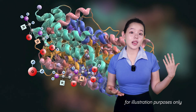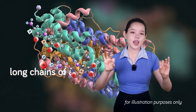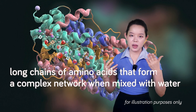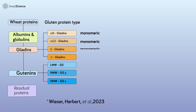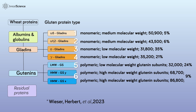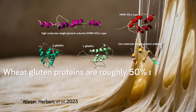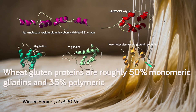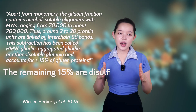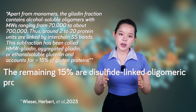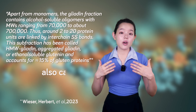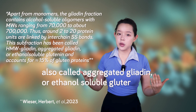To give some visualization of what they look like, these proteins are long chains of amino acids that form a complex network when mixed with water. We can also classify gluten proteins into six different types according to similarities and differences in the amino acid sequences, as shown here. Wheat gluten proteins are roughly 50 percent monomeric gliadins and 35 percent polymeric glutenins. The remaining 15 percent are disulfide-linked oligomeric proteins called high-molecular weight gliadins, also called aggregated gliadin or ethanol-soluble glutenin.